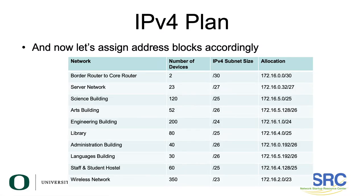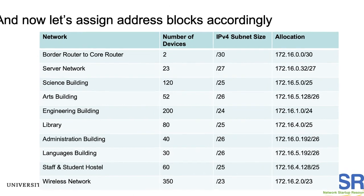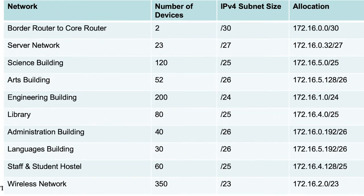Now let's assign the IP address blocks accordingly. For the border to core router, which has two devices, we're allocating the first /30 prefix: 172.16.0.0/30. For the server network with 23 devices, we're allocating a /27 as shown previously — the IP address prefix assigned is 172.16.0.32/27. For the science building with 120 devices we allocated a /25, and we're using the prefix 172.16.5.0/25.